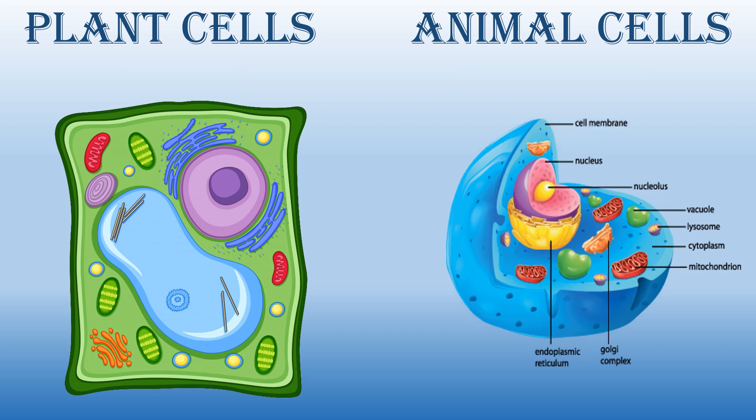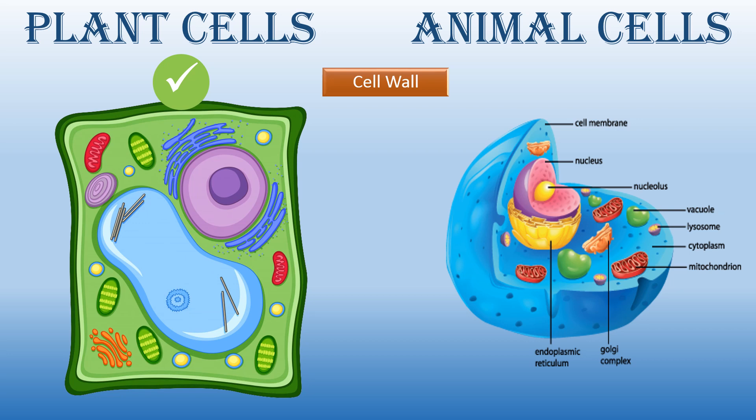The next point is cell wall. Cell wall is present in plant cells, whereas in animal cells the cell wall is absent. The function of the cell wall is to give support to the cell.